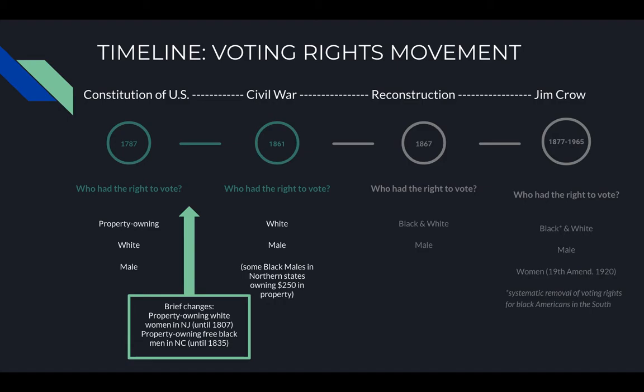From 1877 to 1965, we have what's known as the Jim Crow era. During this time, Black and white men had the right to vote, and then in 1920 women — including some Black women but mostly white women — gained the right to vote according to the 19th Amendment. However, even though Black men had the right to vote, they were systematically removed from that right through various means, which we'll discuss further.